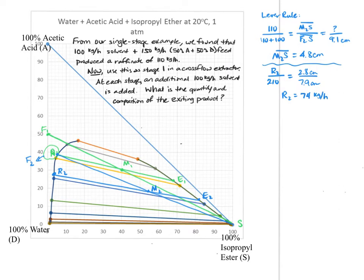Alright, so this is going to now be the feed to stage three. Okay, so if this is F3, I'm going to mix it with solvent. So I'm going to go through this process one more time. So connecting these here, I need to figure out where M3 is. So I'm going to do that using the lever principle.